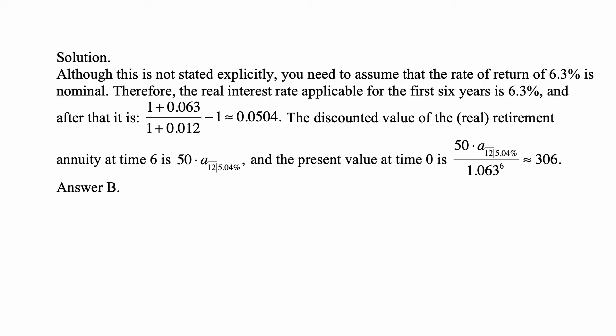That gives a 5.04% after-inflation real return. The discounted value of the real retirement annuity at time 6 is 50 times a-angle-12 at 5.04%. The present value at time 0 is that amount divided by 1.063 — the interest rate applicable for the first 6 years, which is both nominal and real in this period — to the 6th power. That comes to almost exactly 306, which is answer B.